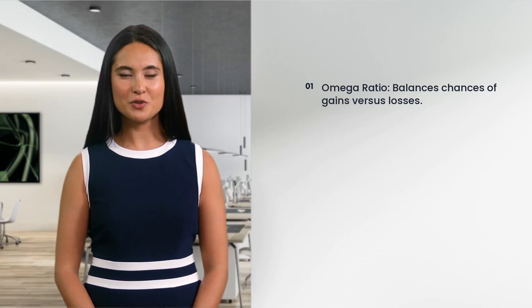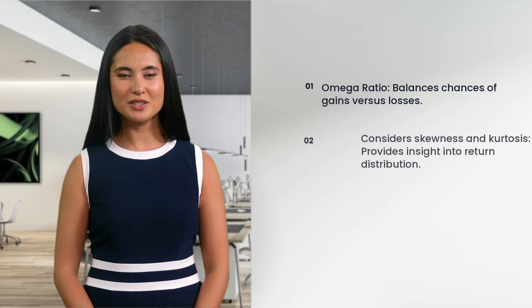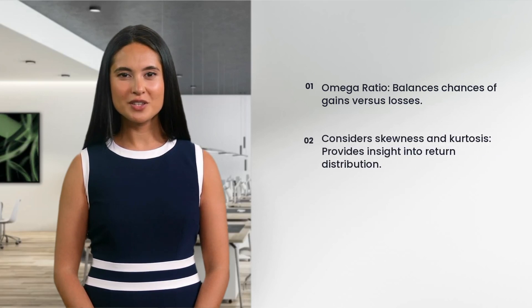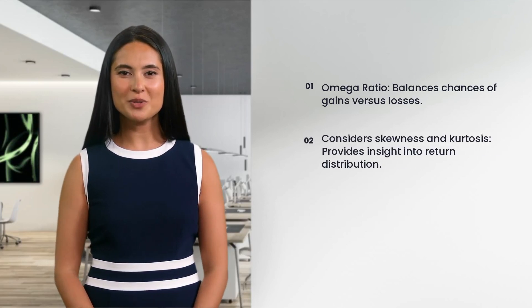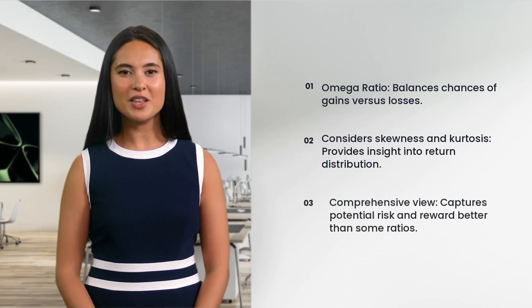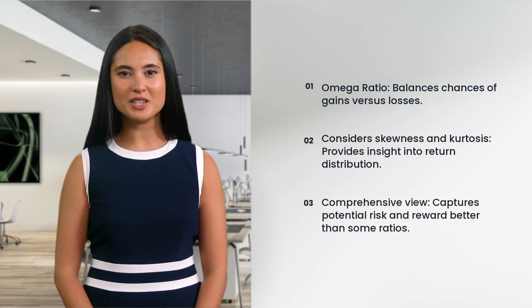The Omega Ratio also takes into account the skewness and kurtosis of the return distribution, giving us insights into how asymmetrical and peaked the distribution is — something that other ratios like the Sharpe Ratio might overlook. So, how do we calculate the Omega Ratio? It's all about capturing the cumulative excess return of an asset, which means tracking the ups and downs of the asset's returns over time and comparing this to our target return.